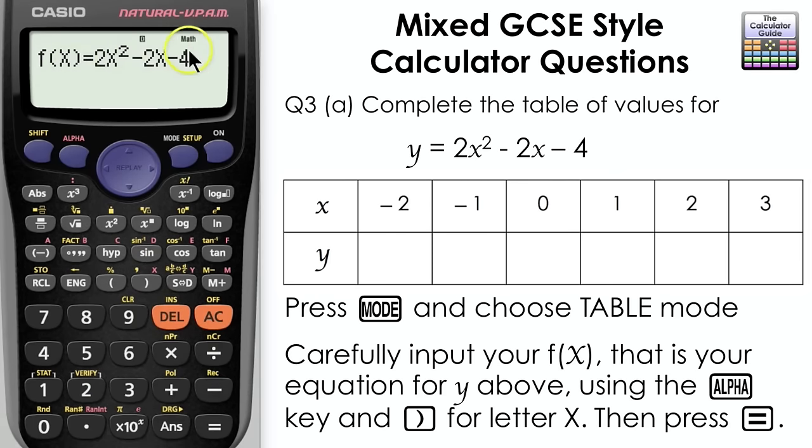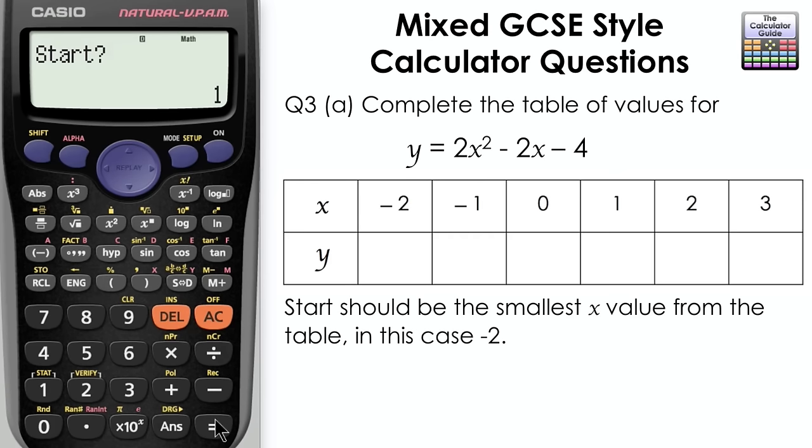Check you have the right equation before you press equals. The start value should be the smallest x value from the table, so the one on the far left. In this case it's -2.